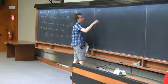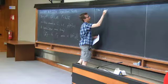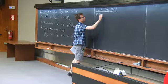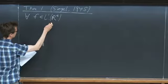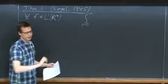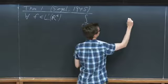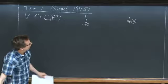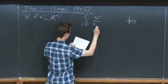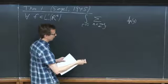Let me write out Siegel's volume formula again. It says that for any L¹ function on ℝ^d, if I take the expected value with respect to a random lattice, and the function I take the expected value of is the Siegel transform of f—that is, I sum f over all points in the lattice except the origin—then according to Siegel, this equals the volume integral of f with respect to d-dimensional Lebesgue measure.